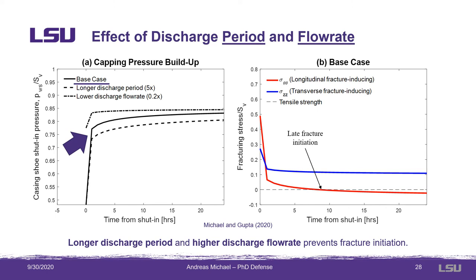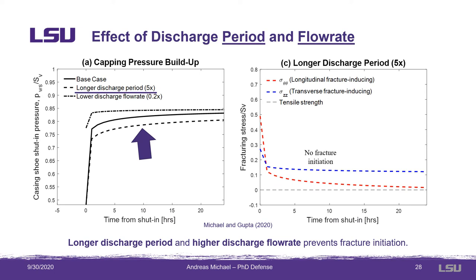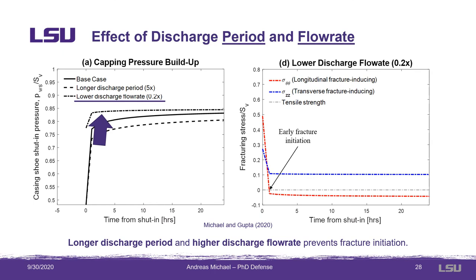Reading from the plot on the right, this corresponds to longitudinal fracture initiation at about eight hours from the shut-in — that is when the tangential stress on the wellbore radius becomes more tensile than the tensile strength of the rock, assumed to be zero. If I keep everything the same but increase the discharge period preceding the shut-in five-fold to five days, the pressure buildup is smaller as shown by the black dotted line, and this prevents any fracture initiation for at least the first 24 hours after shut-in. However, if instead I decrease the preceding discharge flow rate five-fold, the pressure buildup shown by the dash-dotted line will be much higher, translating to longitudinal fracture initiation much faster — only about two hours after the shut-in.